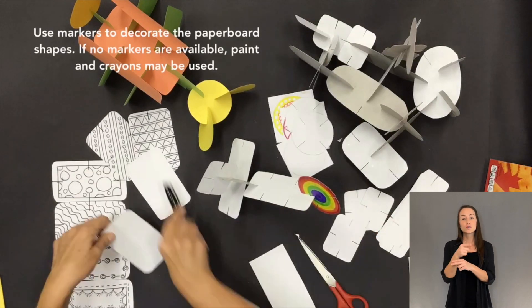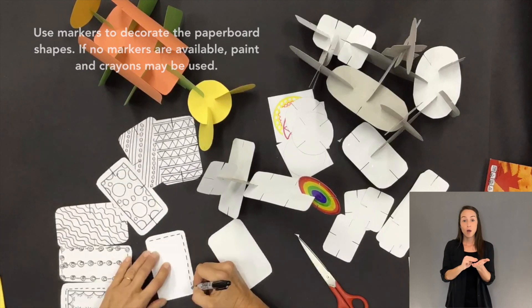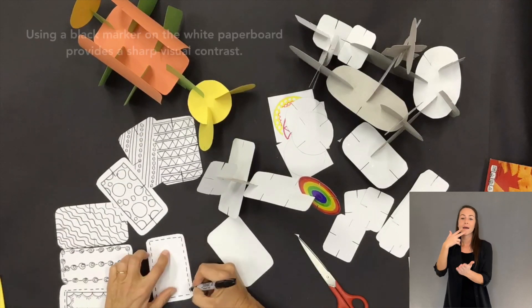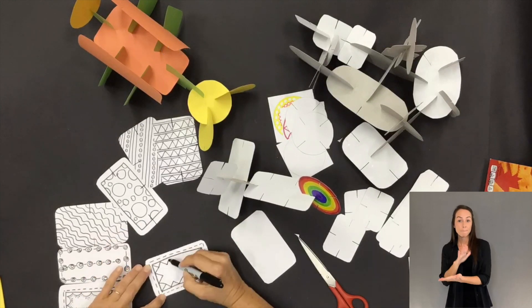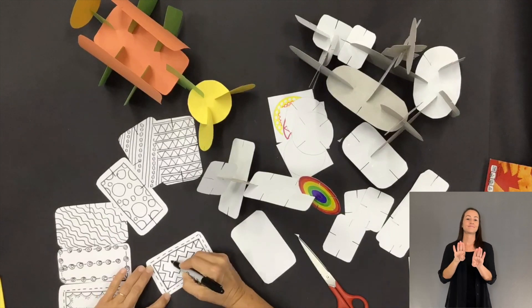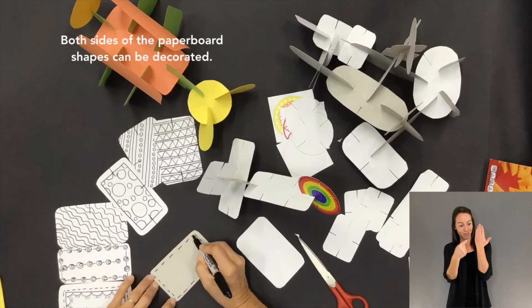Use markers to decorate the paperboard shapes. If no markers are available, paint and crayons may also be used. Using a black marker on the white paperboard provides a sharp visual contrast. Both sides of the paperboard shapes can be decorated.